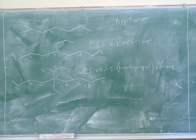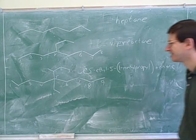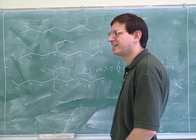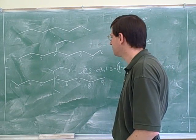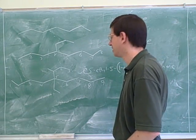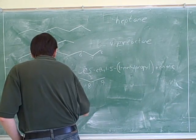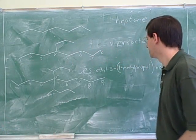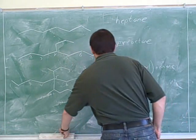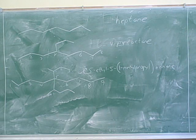If the other substituent was exactly the same as the one on top, would it just be five, one-dimethylpropyl?